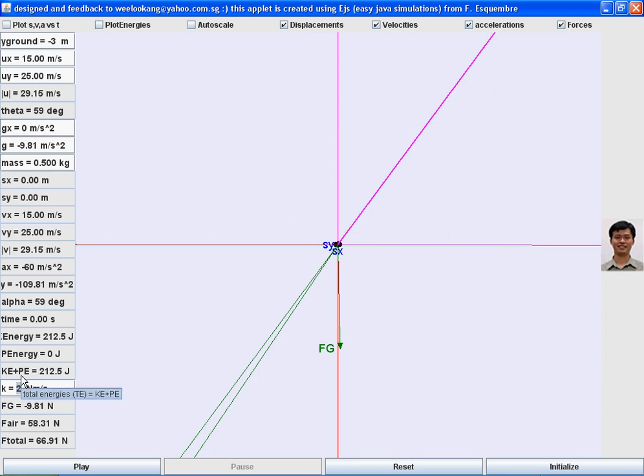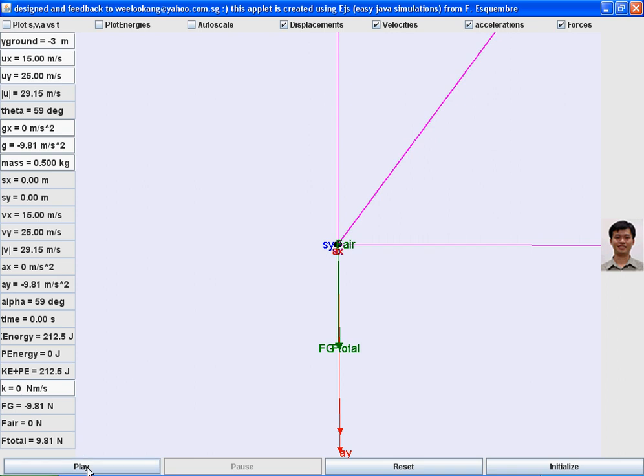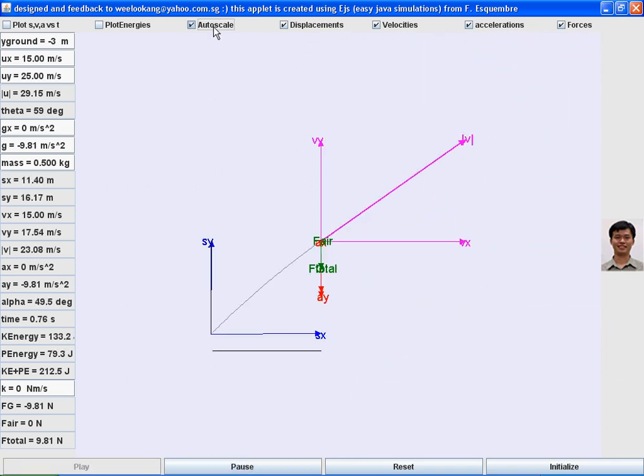K is the air constant, so I'm going to set it to zero for air resistance less simulation.